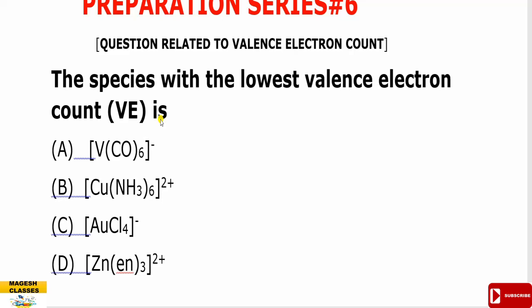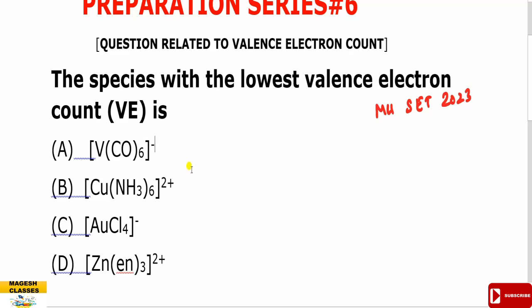This is a basic concept in the valence electron count. This is a set examination question from MH-SET 2023. The question is: which species has the lowest valence electron count? The transition metals given are Vanadium, Copper, Gold, and Zinc. Which one has the lowest valence electron count?